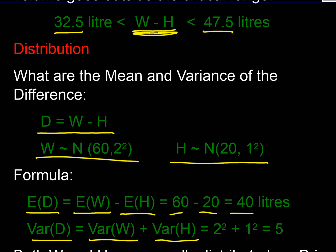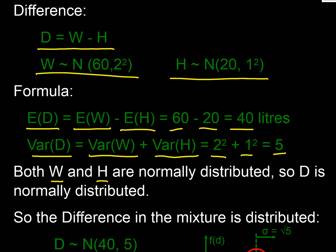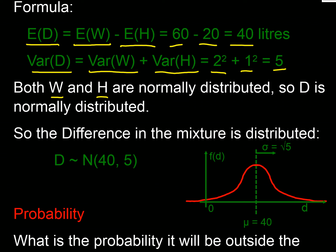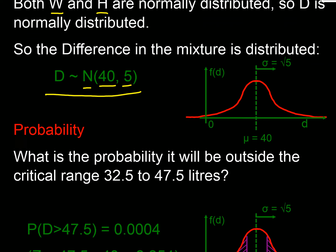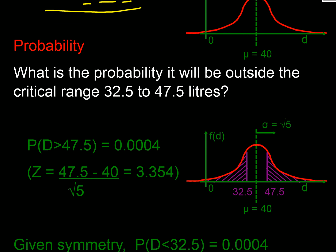The expected difference is: expected volume of water minus expected volume of HCl = 60 − 20 = 40 liters. When finding the variance of the difference, we still add the variances — we don't subtract them, because variance is cumulative. So variance = 2² + 1² = 5. Since both volumes are normally distributed, the difference is also normally distributed: N(40, 5).